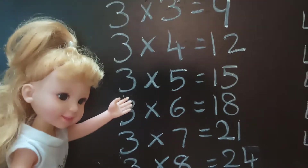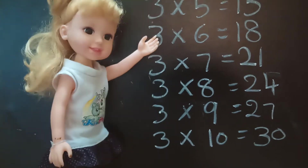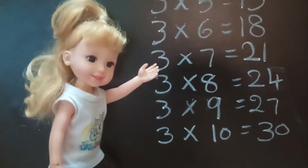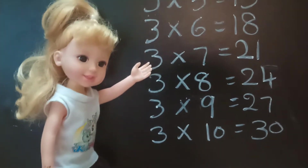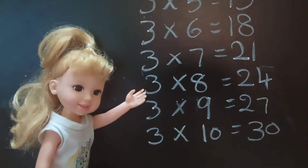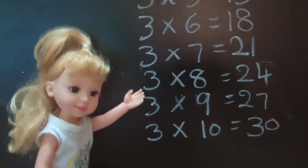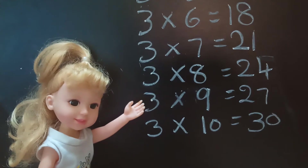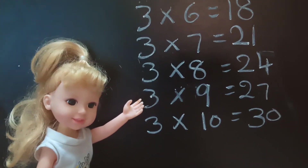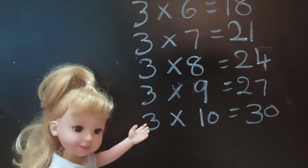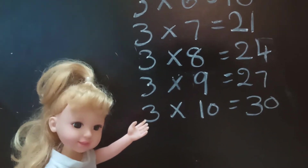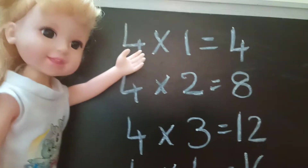3×6=18, 3×7=21, 3×8=24, 3×9=27, 3×10=30. Table No. 4.